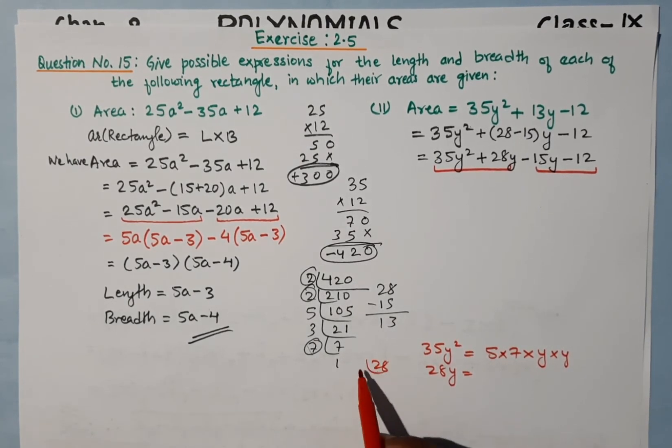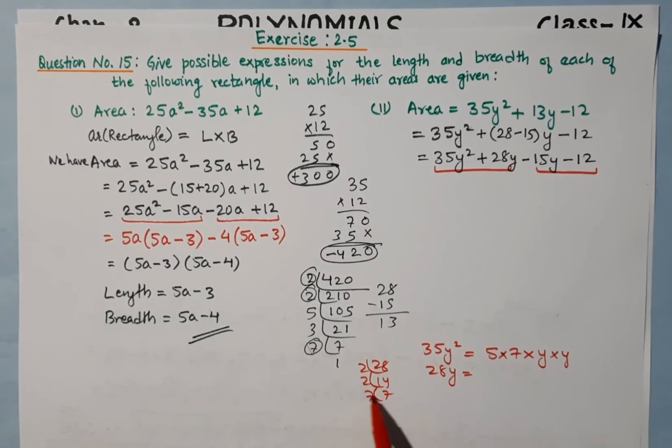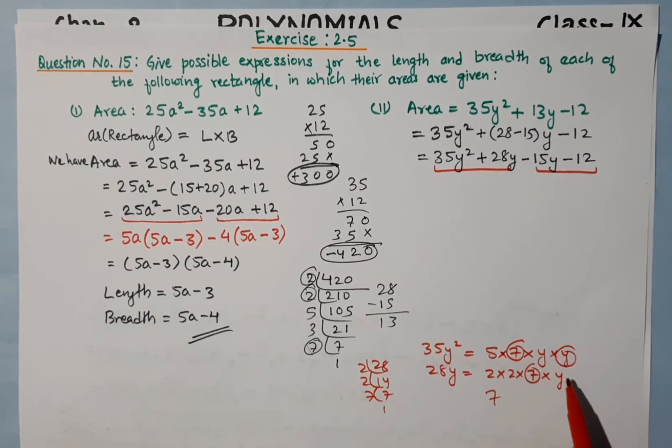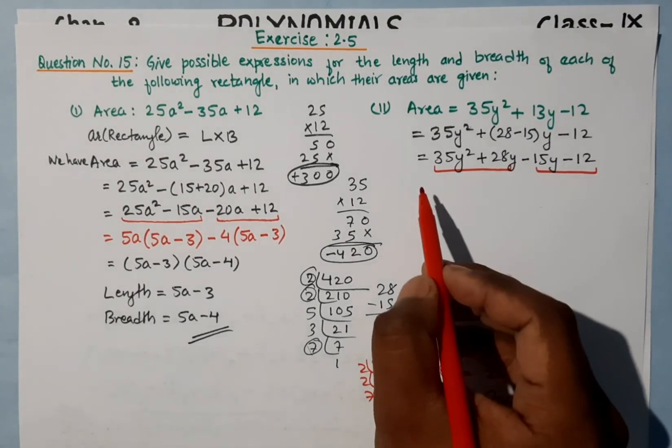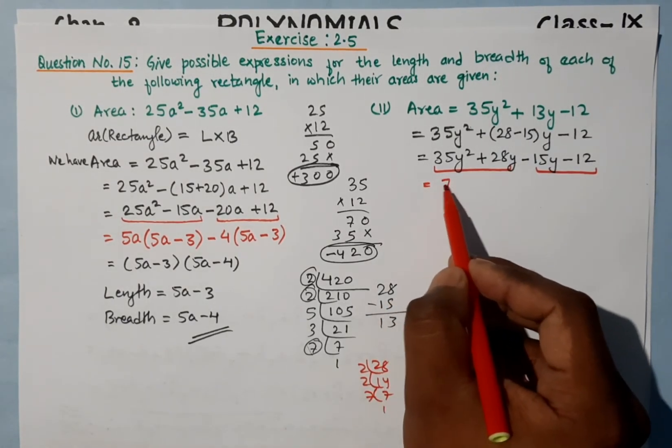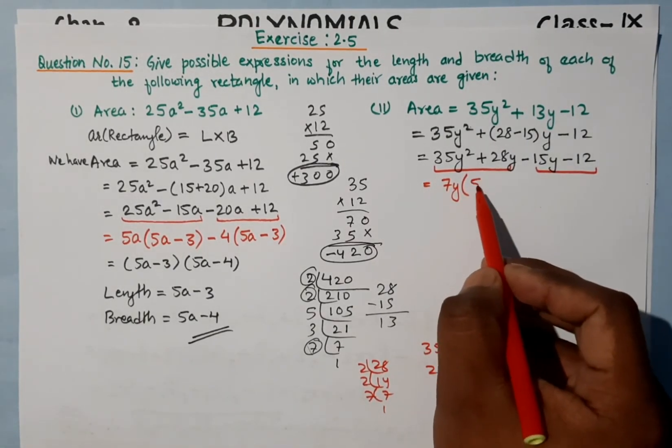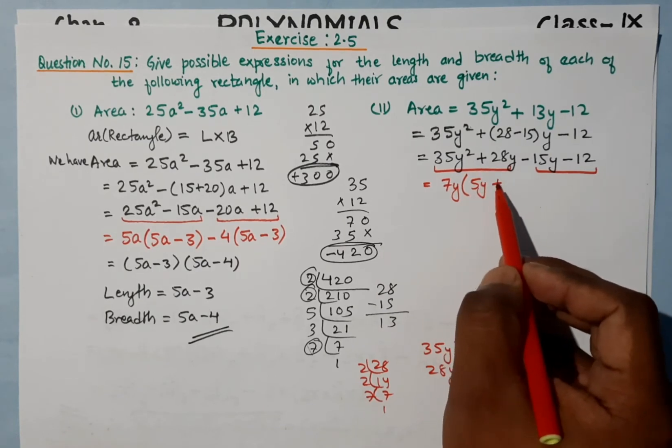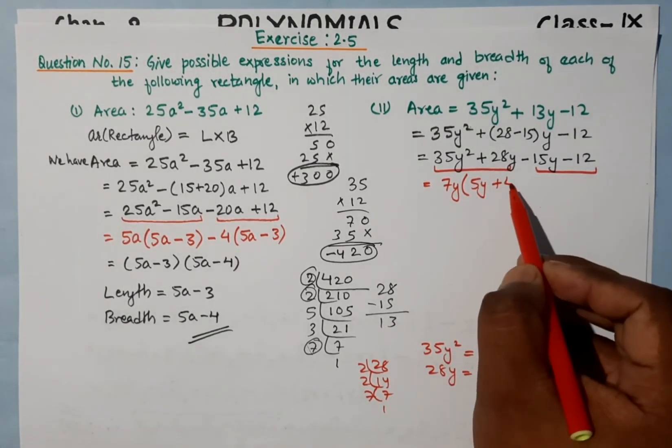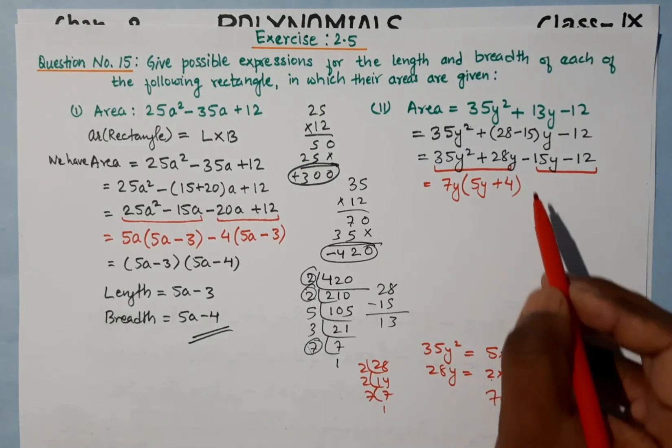35y² is 5 into 7 into y into y. From 28y, we have 2 into 2 into 7 into y. The common factor is 7y. So we get 7y(5y + 4).